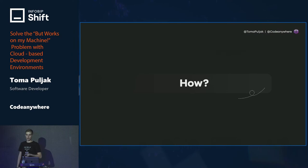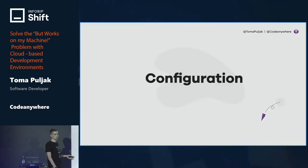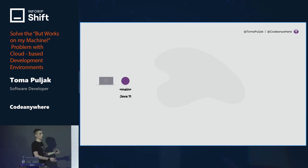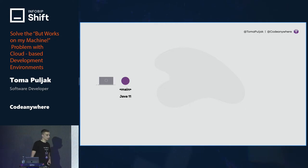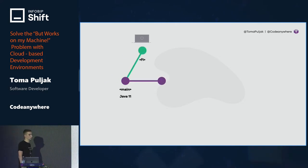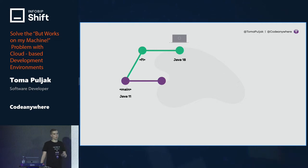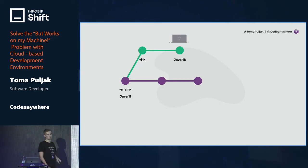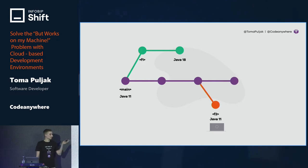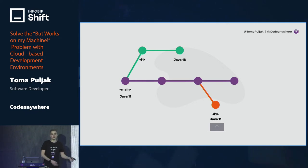Now let's get into how to make all of this possible. We'll start with environment configuration. Let's look at an example of the usual Git workflow: say we're on the main branch running Java 11 and we decide to upgrade to Java 18. We create a feature branch, upgrade locally to Java 18, and start preparing dependencies and code. But meanwhile an issue arises on the main branch, so we need to downgrade our environment back from Java 18 to Java 11.